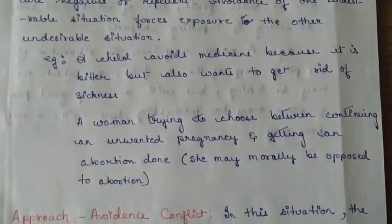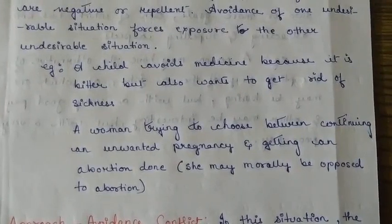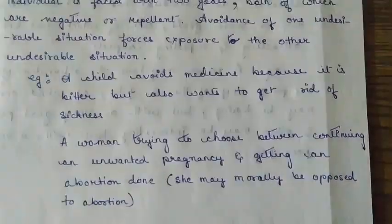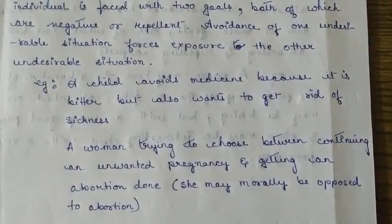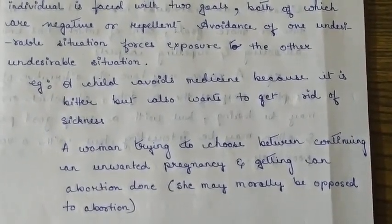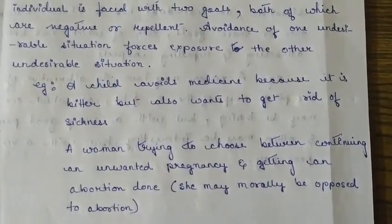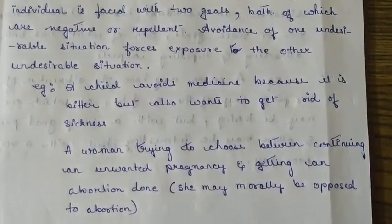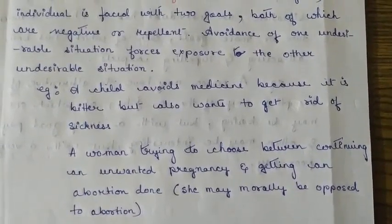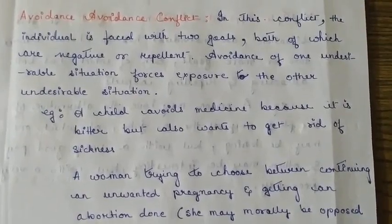Here is one example: a child avoids medicine because it is bitter, but also wants to get rid of sickness. He faces two situations — he wants to avoid the medicine, and he also wants to avoid the sickness — but out of these two options he has to choose one. As a result, the person goes through avoidance-avoidance conflict.